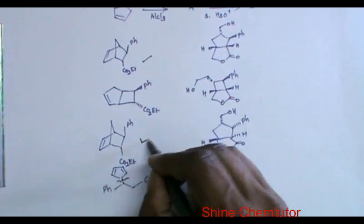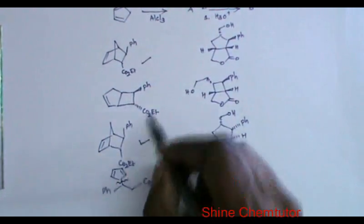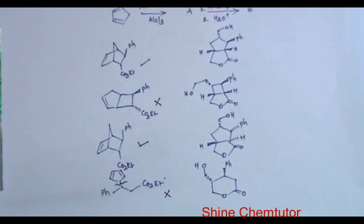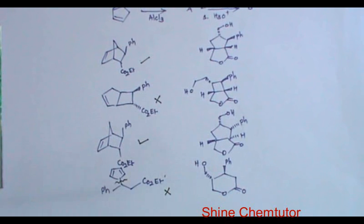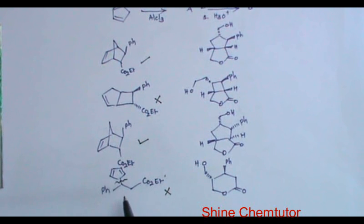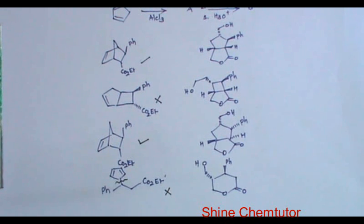These two are more preferred than the others. This one is not at all possible. This one is possible under photochemical condition. This will be possible if you go for a base — instead of aluminum chloride, which is a Lewis acid — if you go for a base, then there is a possibility for this 1,4 addition. But under this condition, there is no possibility.